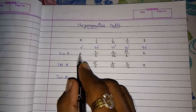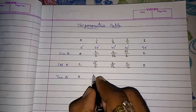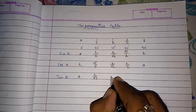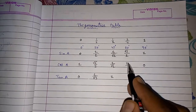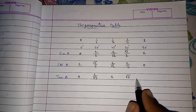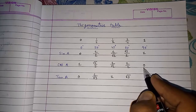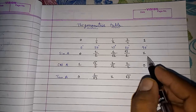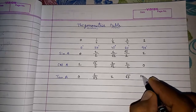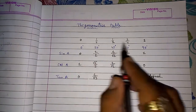For tangent, we divide sine by cosine. Tan 0° = 0/1 = 0. Tan 30° = (1/2) ÷ (√3/2) — the 2s cancel — giving 1/√3. Tan 45° = (1/√2) ÷ (1/√2) = 1. Tan 60° = (√3/2) ÷ (1/2) = √3. Tan 90° = 1/0, which is not defined, since any number with 0 in the denominator cannot be defined.